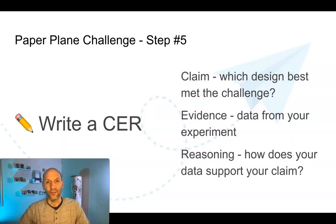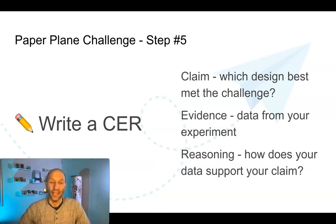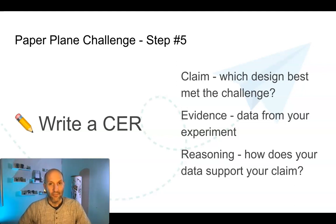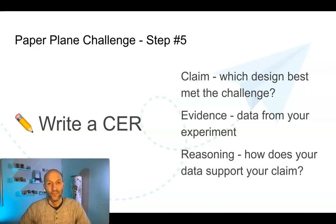Your final step is to write your CER, or your conclusion. You chose a challenge — either how far it could fly, how long it could fly, or how far it could fly while holding three pennies. You tested your paper airplanes; now it's time to decide which design best met the challenge. A CER includes a claim, evidence, and reasoning, and should be at least three sentences. For your claim, answer the question: which design best met the challenge? Don't include evidence or the word 'because' — simply answer the question.